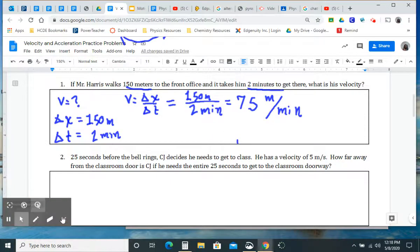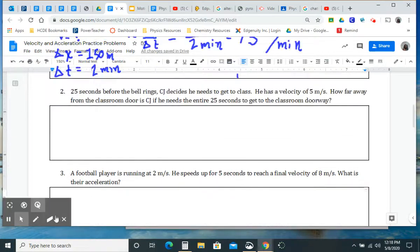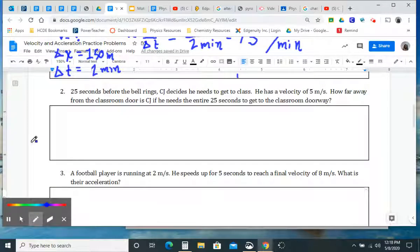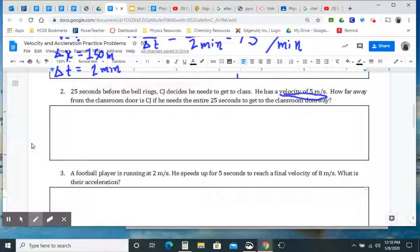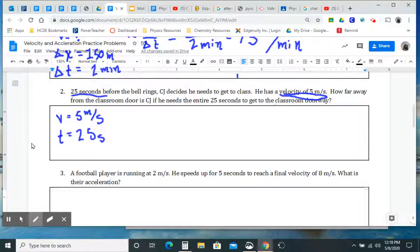I got to get down here to my mouse, scroll down a little bit, and we see that. For this one, it says 25 seconds before the bell rings, CJ decides he needs to get to class. He has a velocity - so it went ahead and told us the velocity here. His velocity of five meters per second. So I'm going to go ahead and write that down. V equals five meters per second. And looking up here, we kind of skipped this, but it says 25 seconds before the bell rings. So something about time is going to be 25 seconds.